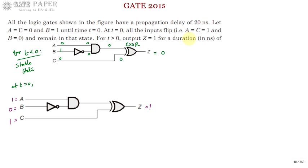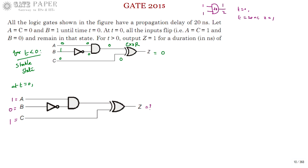The meaning of propagation delay: if you are using an ideal AND gate and you give inputs 1 and 1, the output is 1 immediately. But if the gate has a propagation delay — say 20 nanoseconds — then as soon as you apply the inputs, it takes 20 nanoseconds of time to get the output. So if at t equals 0 you apply 1, 1, then the output Z will become 1 only after t equals 20 nanoseconds. Propagation delay is the time required for the gate to reach the stable state for the applied input combination.